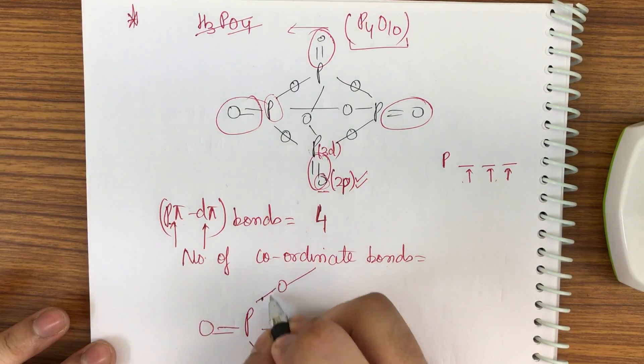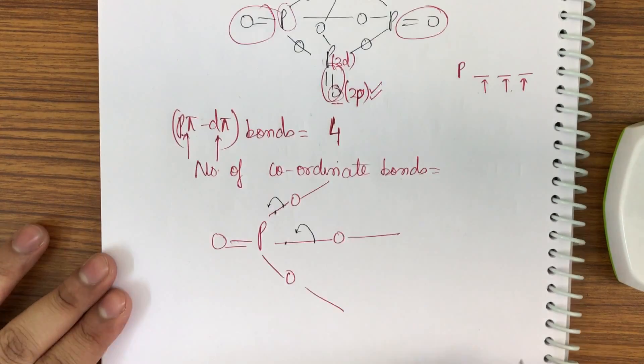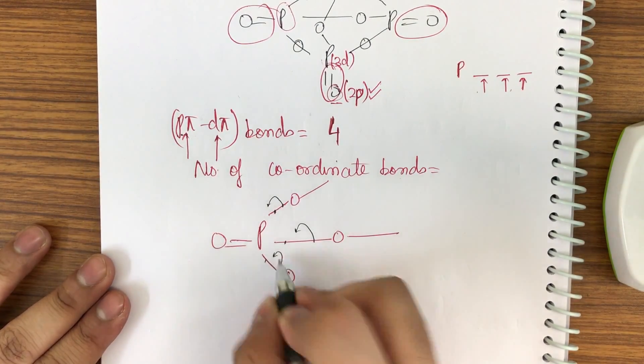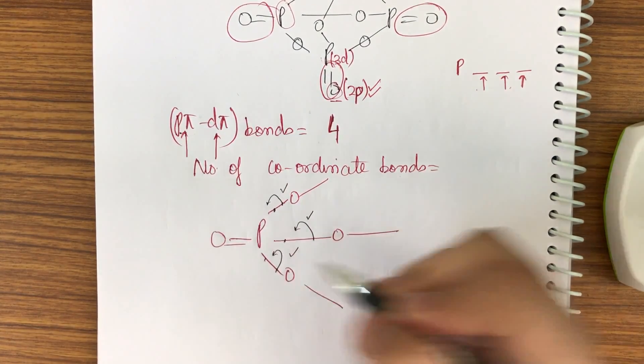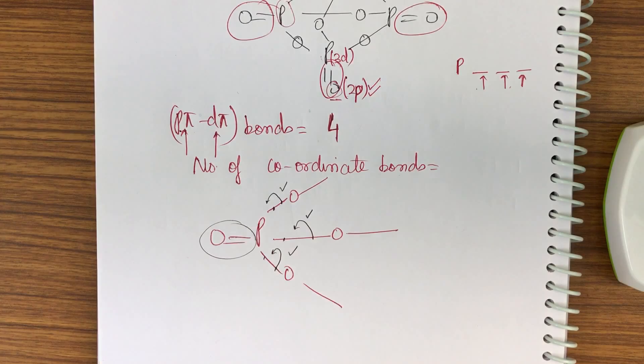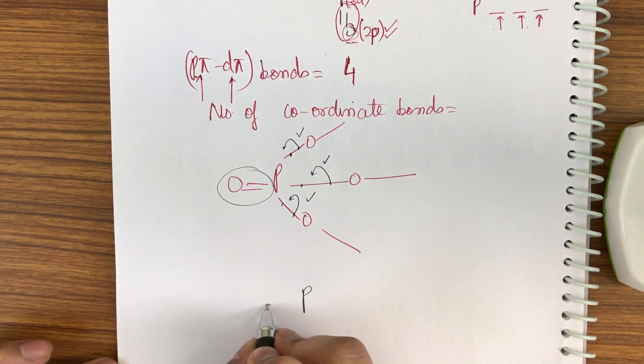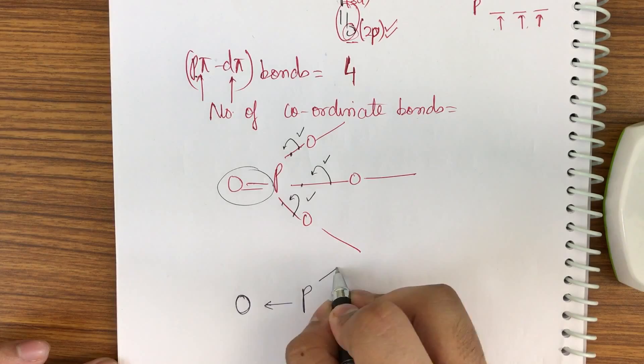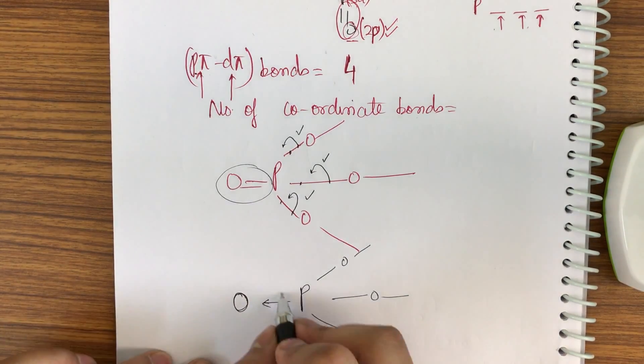It has to get 3 electrons for satisfying the valency. So these 3 electrons can be gained from - see this bond one electron extra, one electron extra, one electron extra. The balance is satisfied by these 3 bonds only.